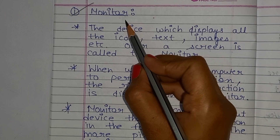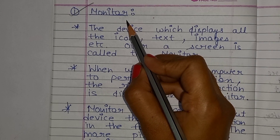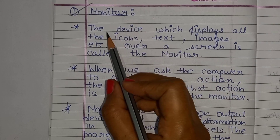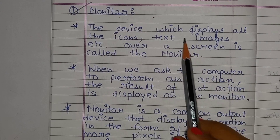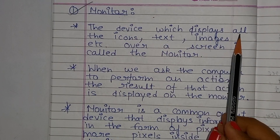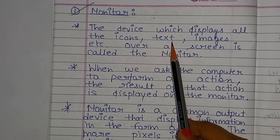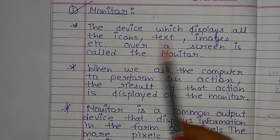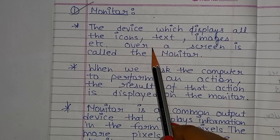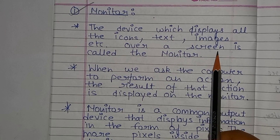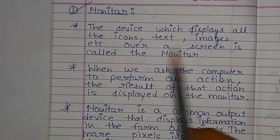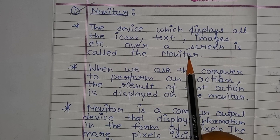The first output device is a monitor. The device which displays all the icons, tags, images, etc. over a screen is called the monitor.